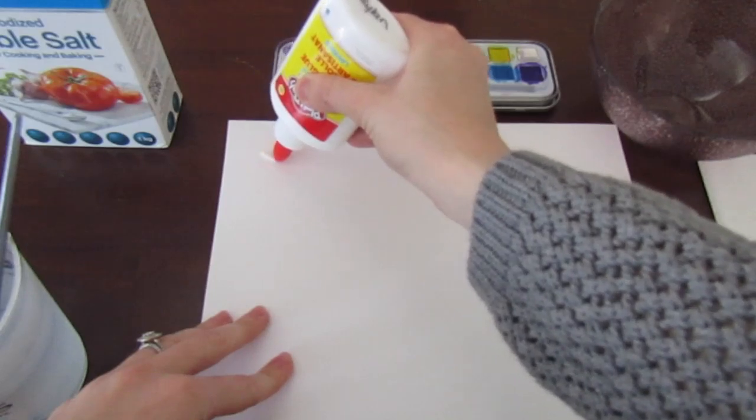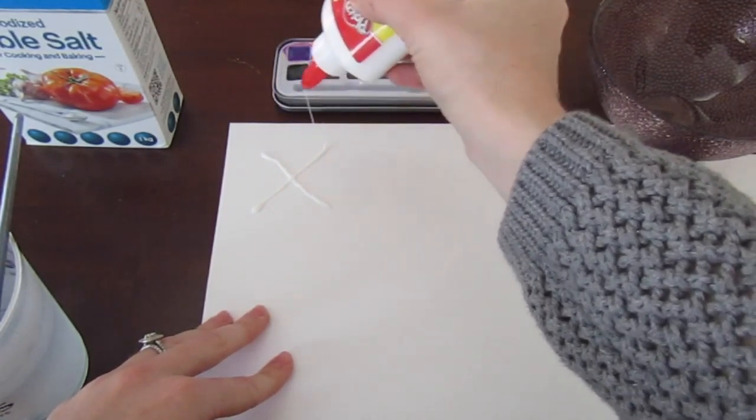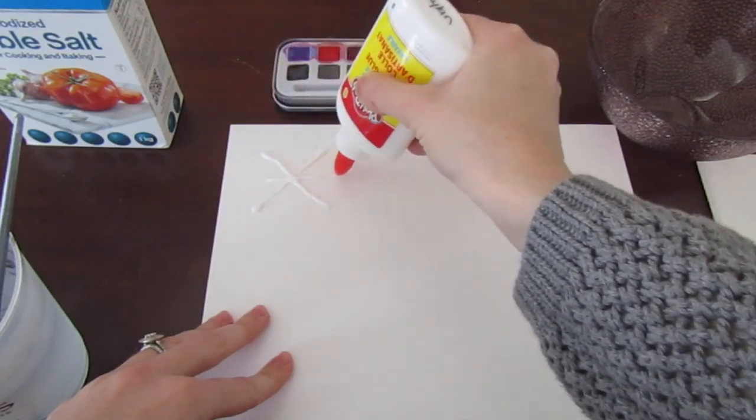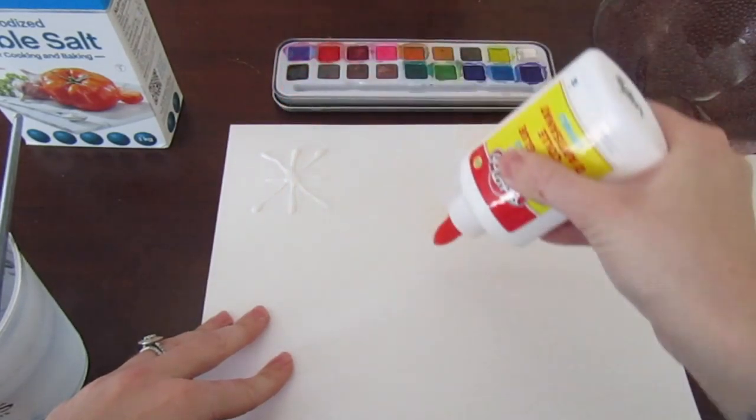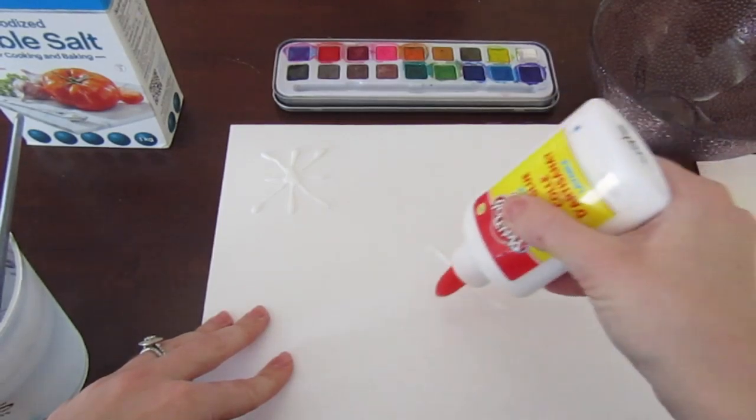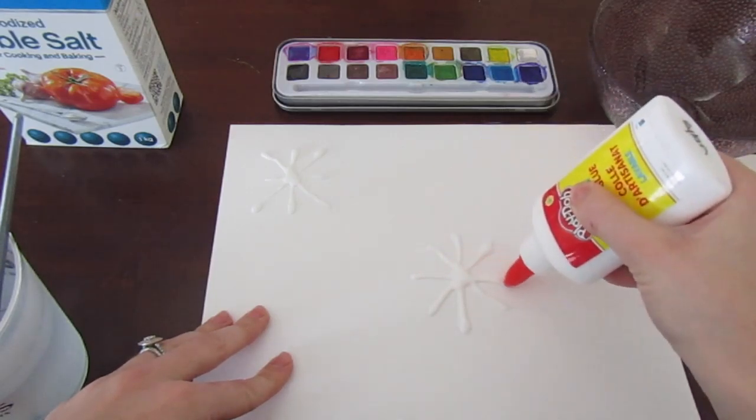You are also going to need a bowl and this is just to pour the excess salt off into. So using your glue we're going to draw snowflakes, as many as you like on your paper. I'm drawing snowflakes but really you can draw any object you like.